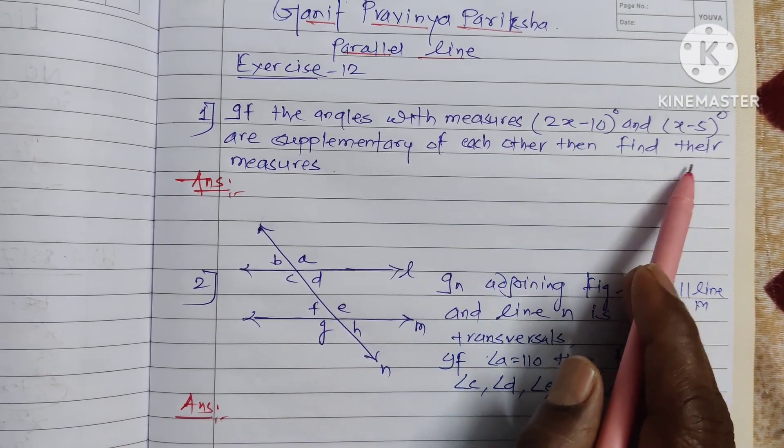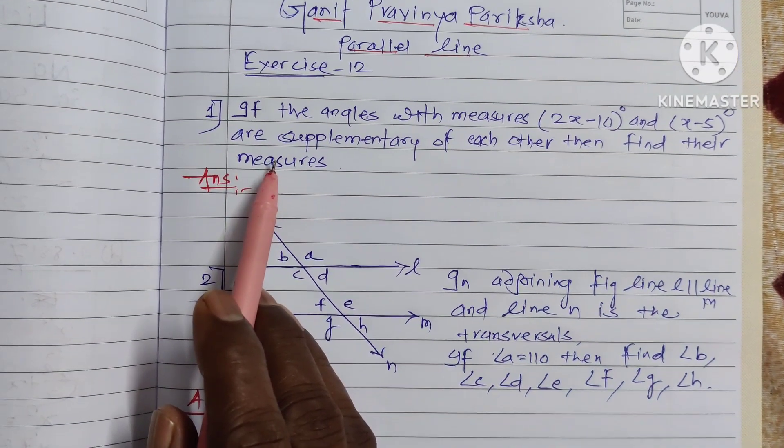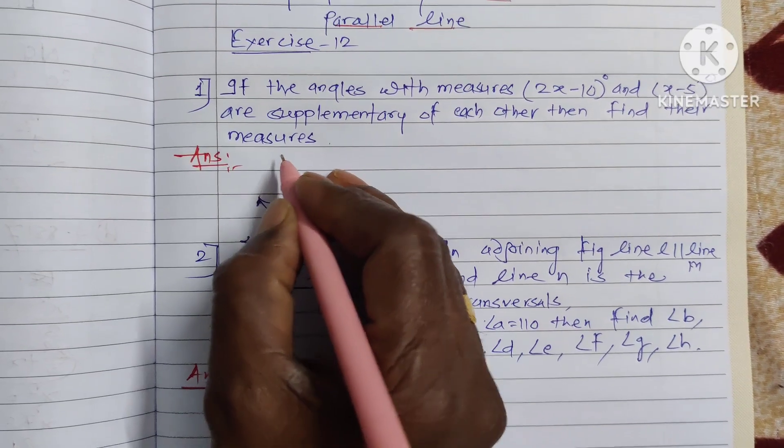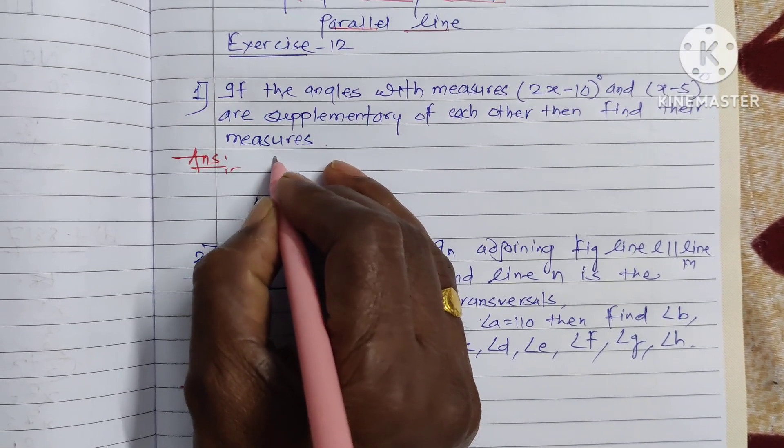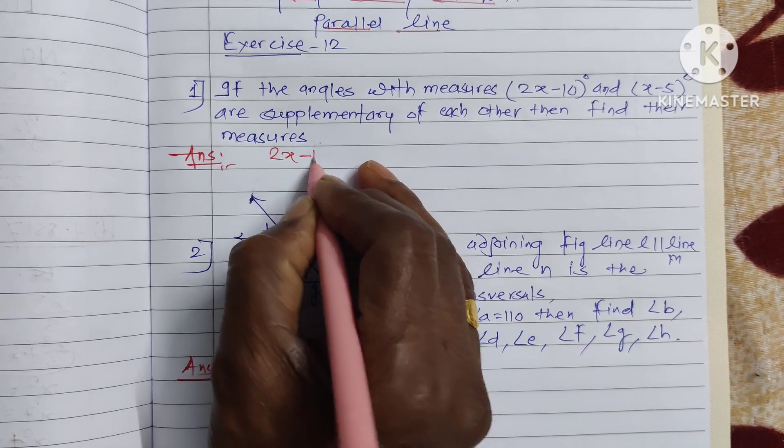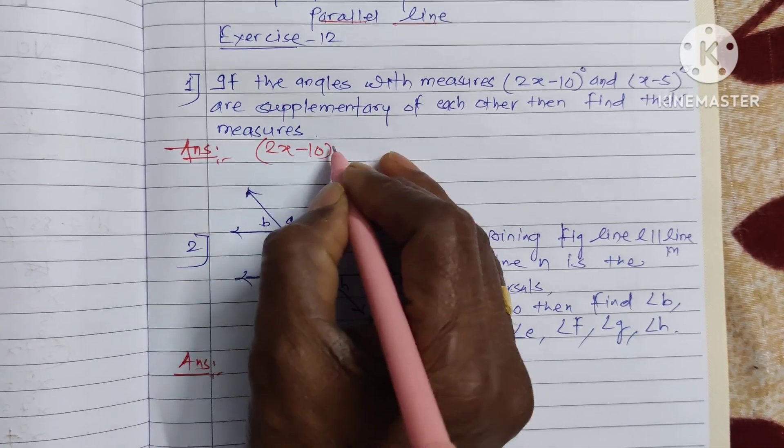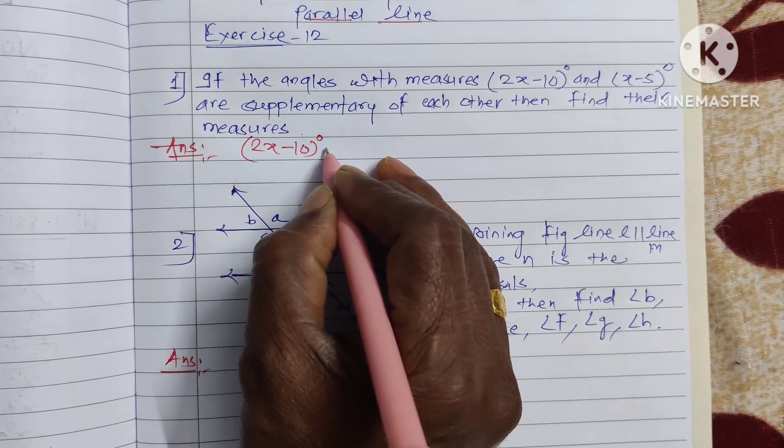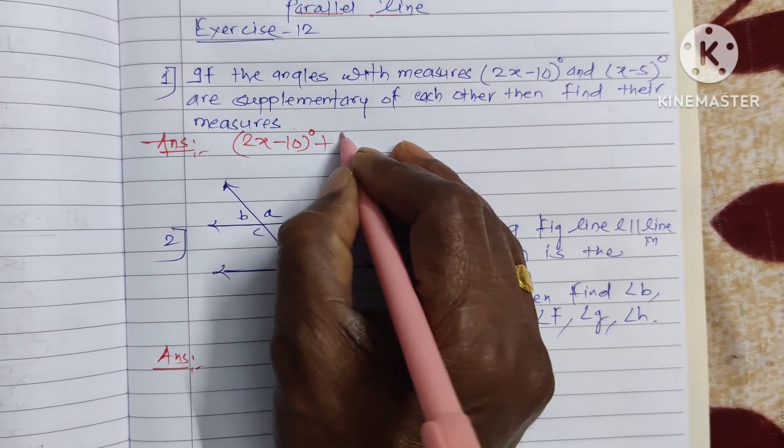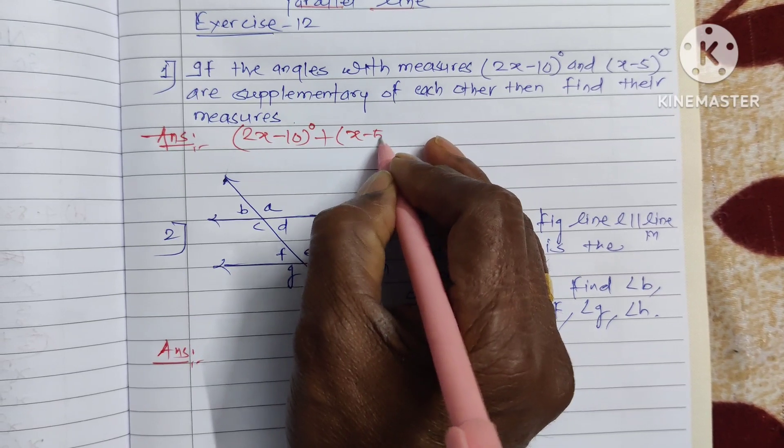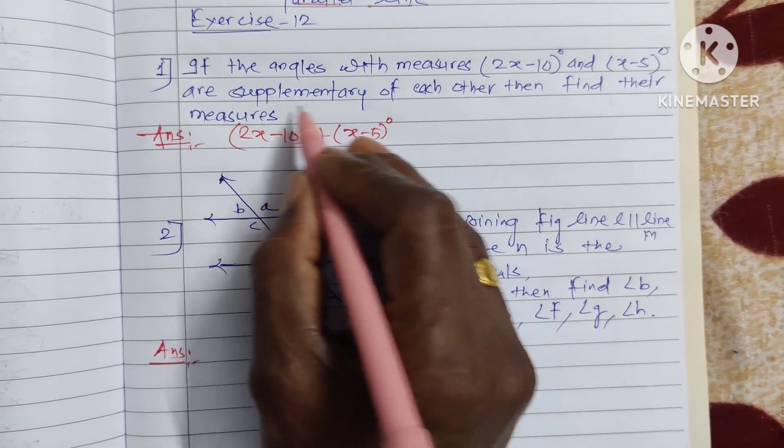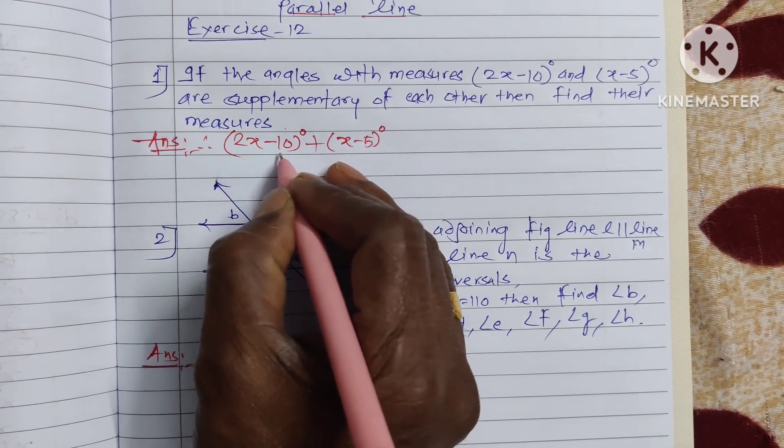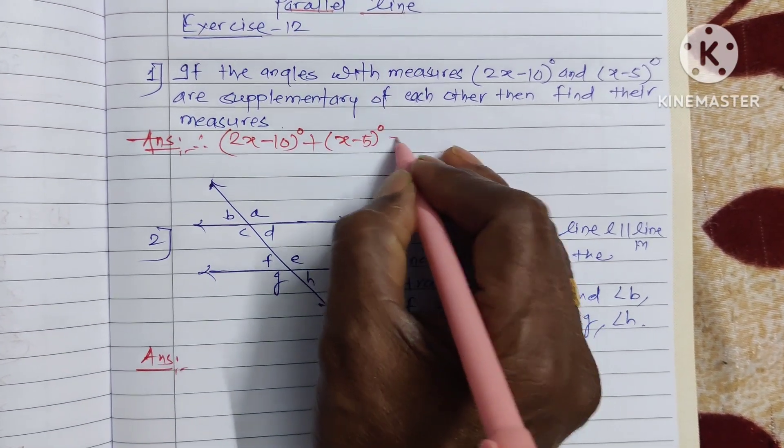Therefore 2x minus 10 and another angle is x minus 5 are supplementary. Therefore 2x minus 10 plus x minus 5 equal to 180.